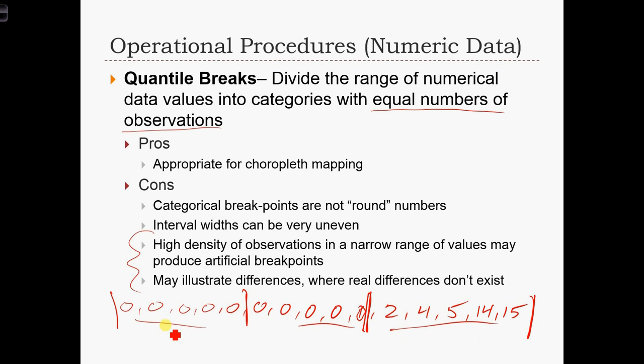Now if we were to color these as, say, white, yellow, and blue, and then make a map of these data values, we're going to artificially differentiate between these zeros in the white category and these zeros in the yellow category. And we're going to demonstrate or communicate that there's some difference here, where in fact there is no real difference at all.